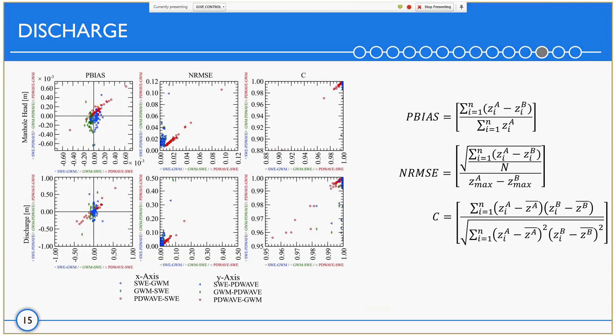On the normalized root mean square error, PD wave distances itself from both the gravity wave and the shallow water, as seen by an almost diagonal line. The difference also between the gravity wave and the shallow water is very small, with values that go beneath 0.02 in both the manhole head and discharges. The Pearson correlation shows that the time series for the gravity wave and the shallow water have considerably higher correlations than the one with PD wave.